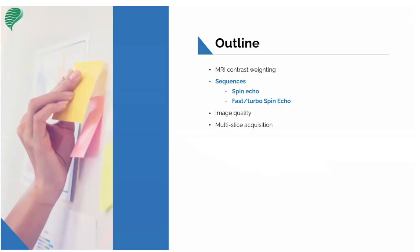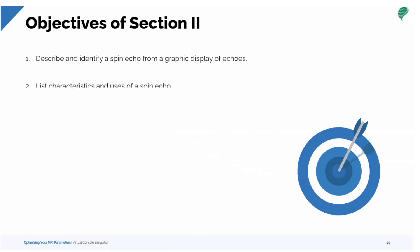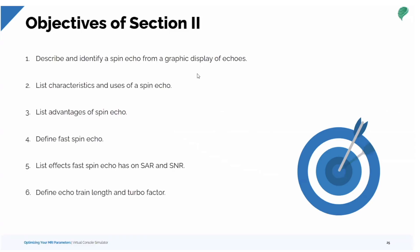Let's move to the next sequence and look at pulse sequences. We'll look at the two most common: spin echo and fast spin echo. We'll describe and identify the spin echo from a pulse sequence diagram — also known as a chronogram — list its characteristics, uses, and advantages. We'll look at fast spin echo, define it, and examine the effects FSE has on SAR — our specific absorption rate, or amount of RF energy deposited into tissue — as well as SNR. Then we'll look at echo train length and turbo factor.